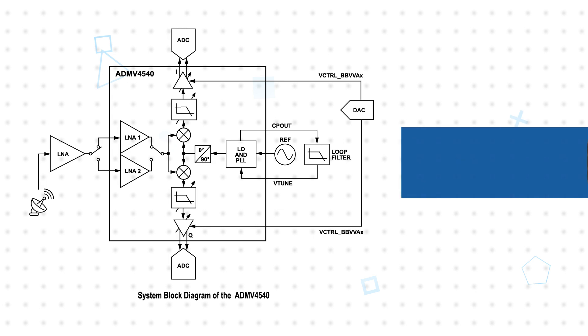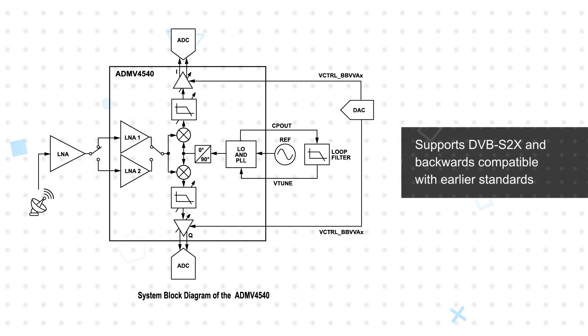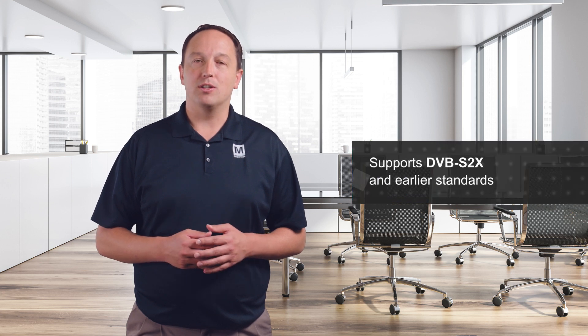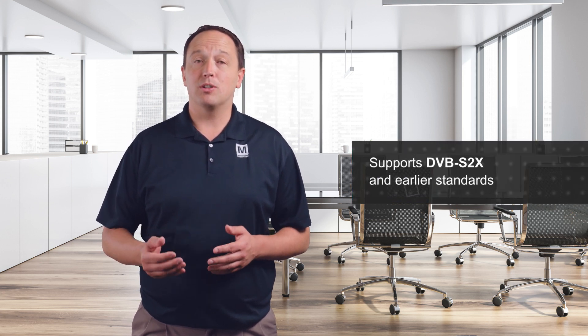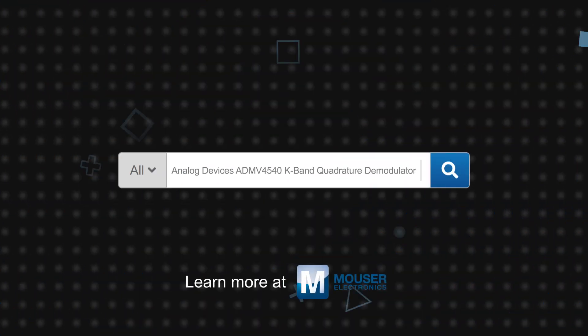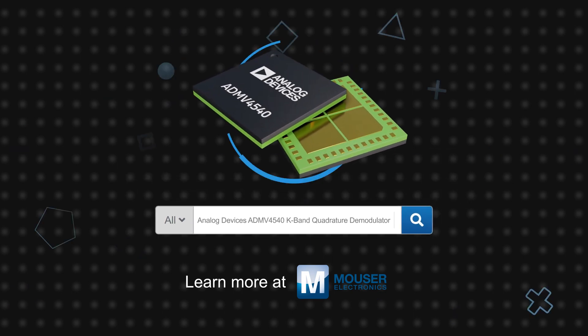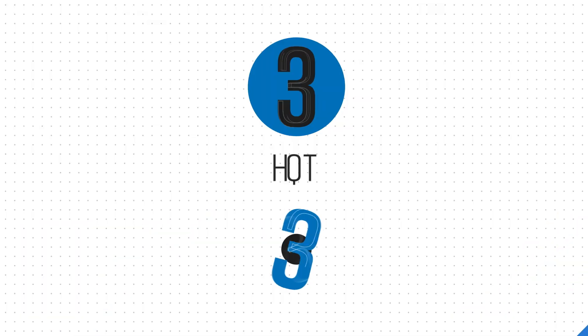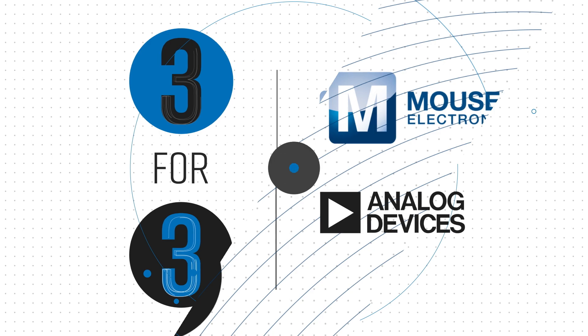The ADMV4540 offers excellent matching between in-phase and quadrature channels, as well as high spurious-free dynamic range for all gain and bandwidth settings, making it ideal for challenging next-generation satellite communications whether it's GEO, LEO, or MEO. It is intended for use in the ground-based receiver of a user terminal or gateway, can interface directly with the receiver ADC, and requires minimal external components. The ADMV4540 supports the DVB-S2X standard and is backwards compatible with earlier standards. The Analog Devices ADMV4540 K-band quadrature demodulator is available now on Mouser.com.